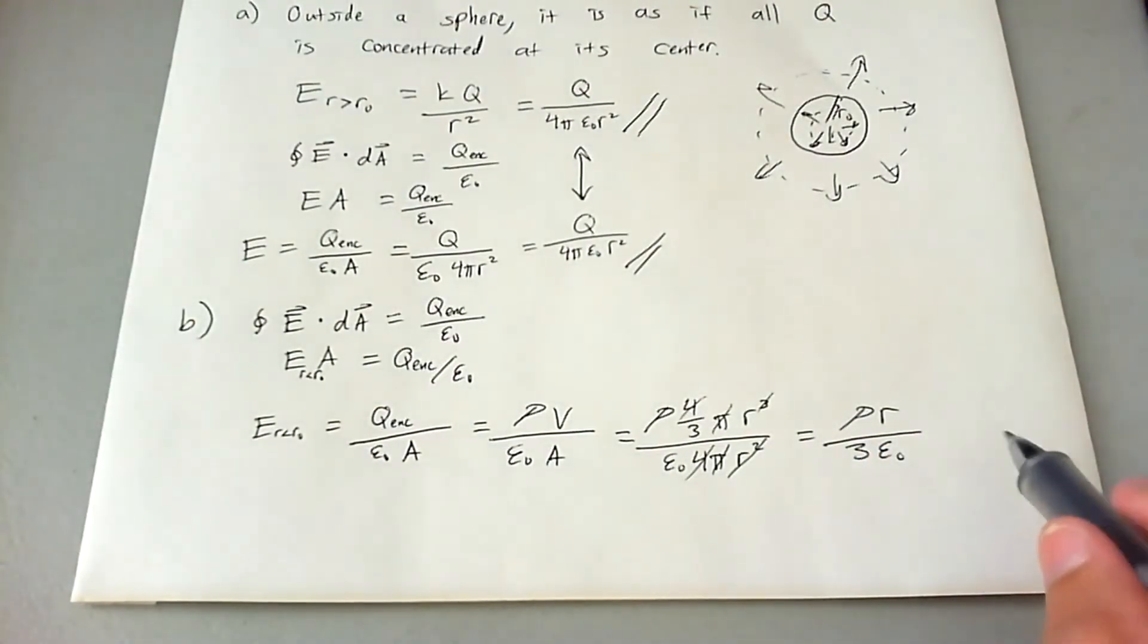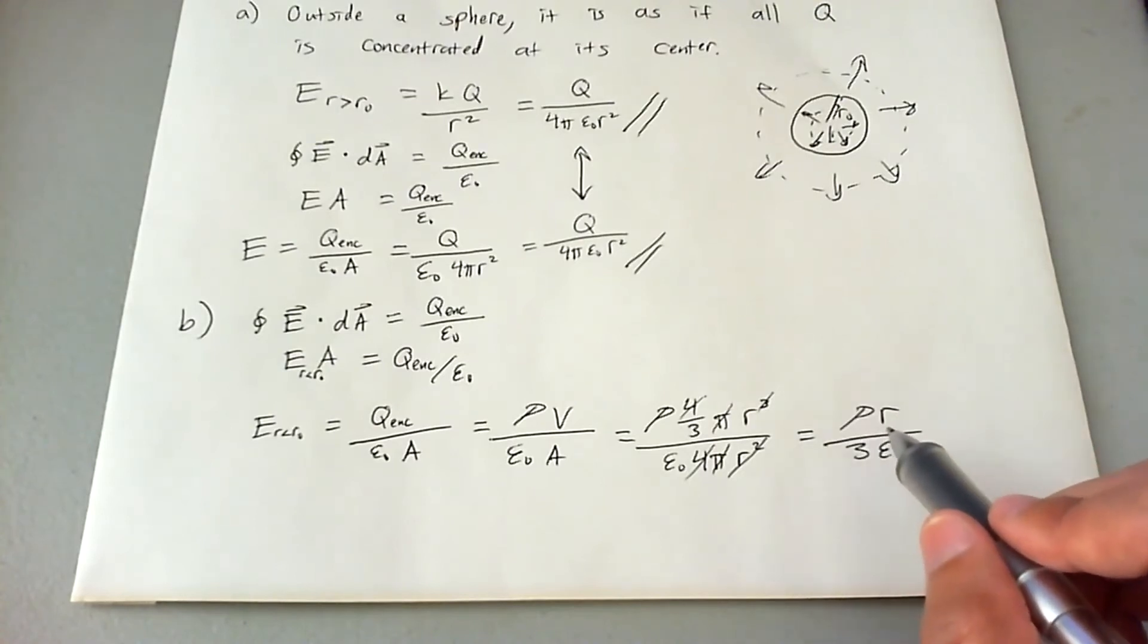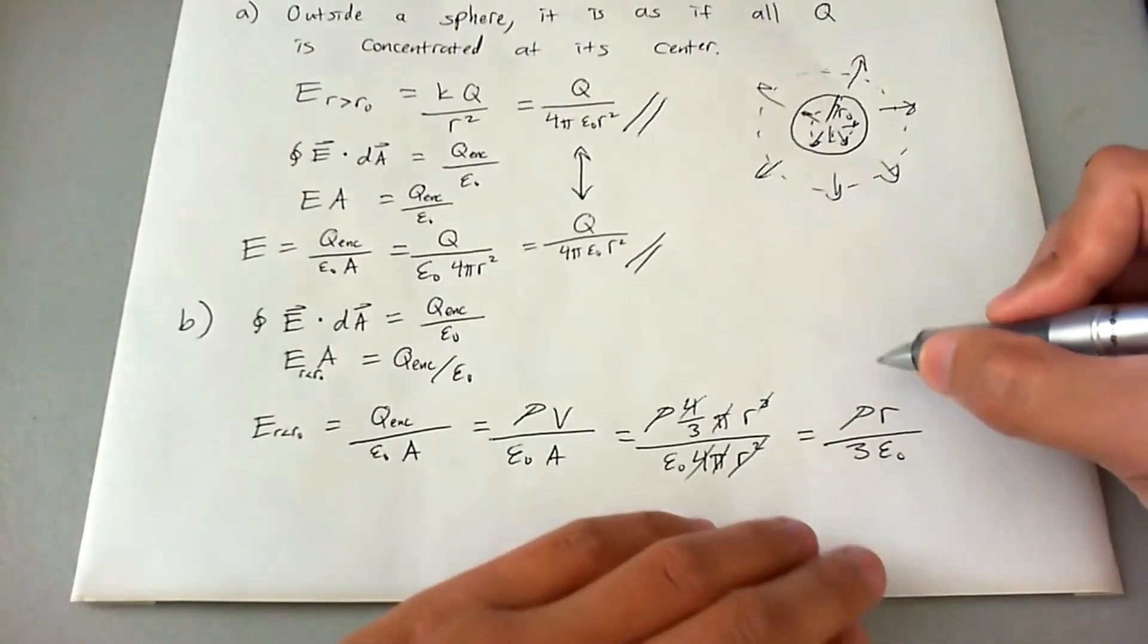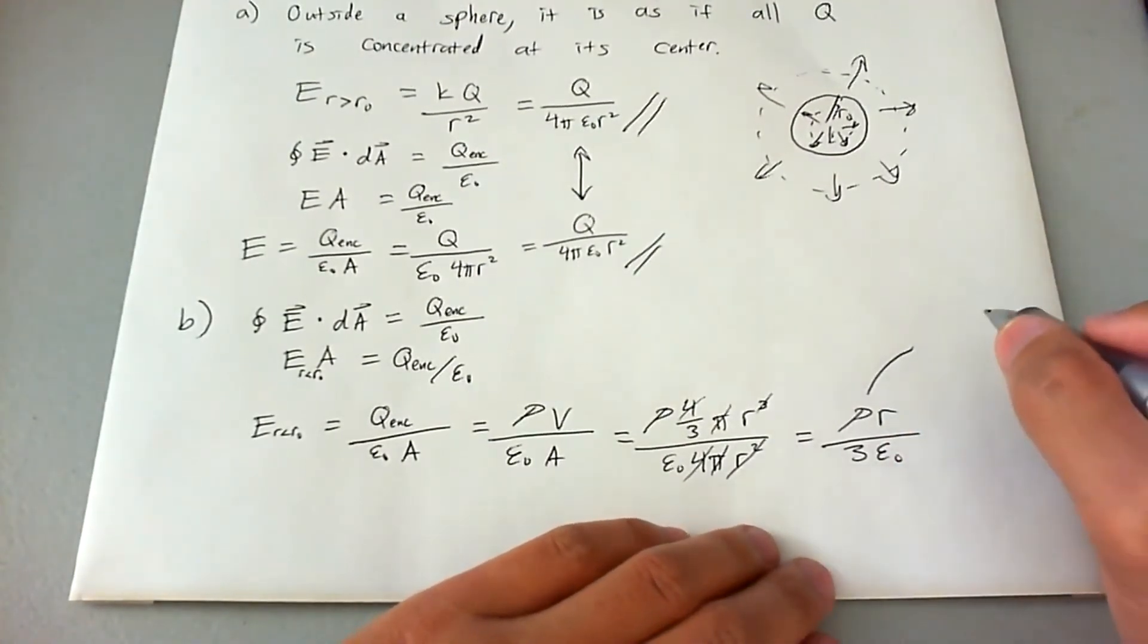Let's go ahead and do a few cancellations. So π's cancel out. 4 cancels out. r squared cancels out with 2 of the 3 r's on top. And this will end up being ρr over 3 epsilon naught. Now, this would be a pretty satisfying answer, except in the original question there is no ρ. So we're adding in something that wasn't even given to us in the original question. What I want to do is get it back into Q because Q is in the original question.